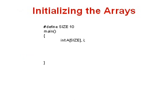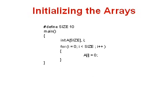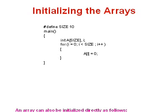Now how can we initialize the array? We will see through this example. Here we have declared an array a of size 10, where size has been defined as 10. We use a for loop: for i equals 0, i less than size, i++. So we are incrementing i from 0 to size and initializing the value of each element of the array to 0.